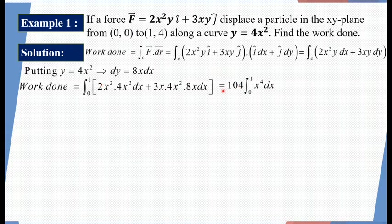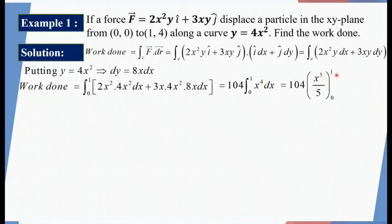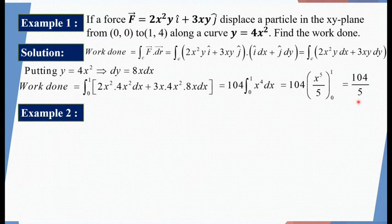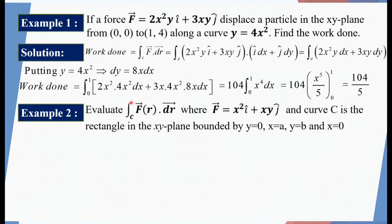Taking 104 outside the integral: 104 times integral from 0 to 1 of x⁴ dx. The integral of x⁴ is x⁵/5, so putting in the limits 0 to 1 gives 1/5. Therefore the entire work done is 104/5. This is the required solution to Example 1.